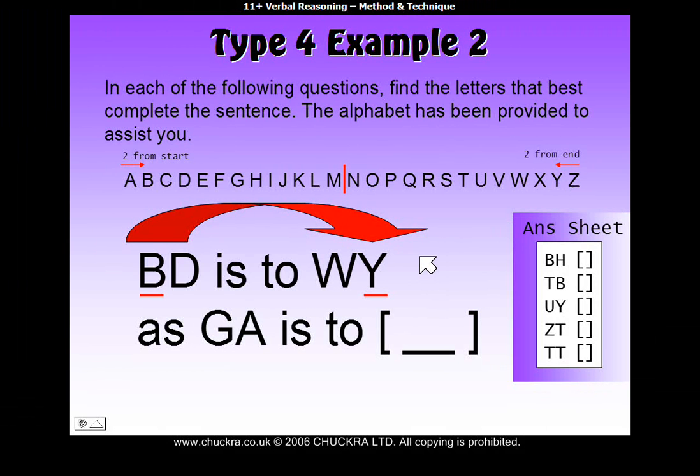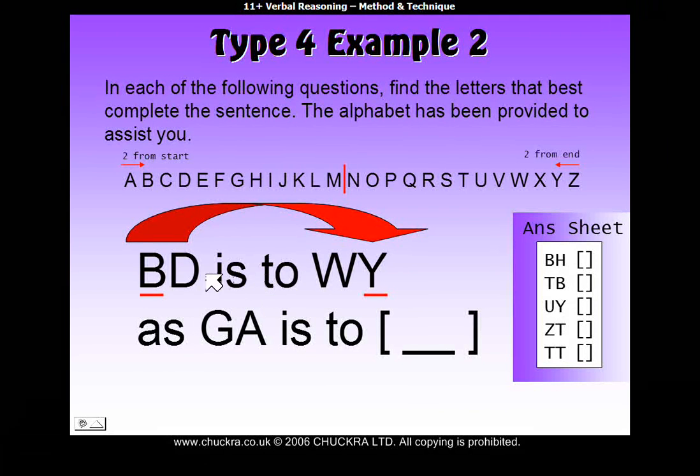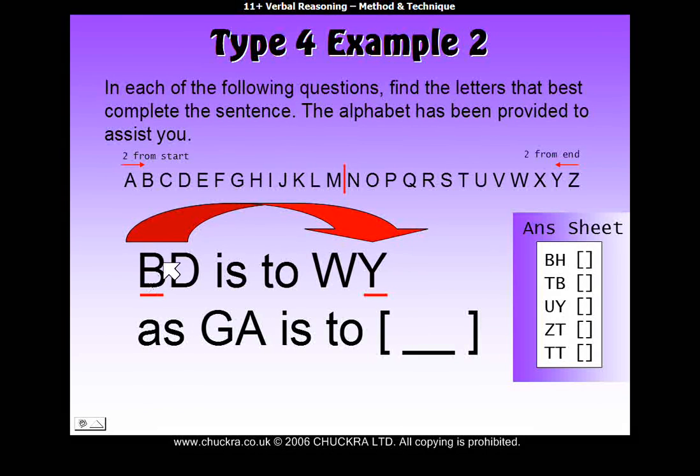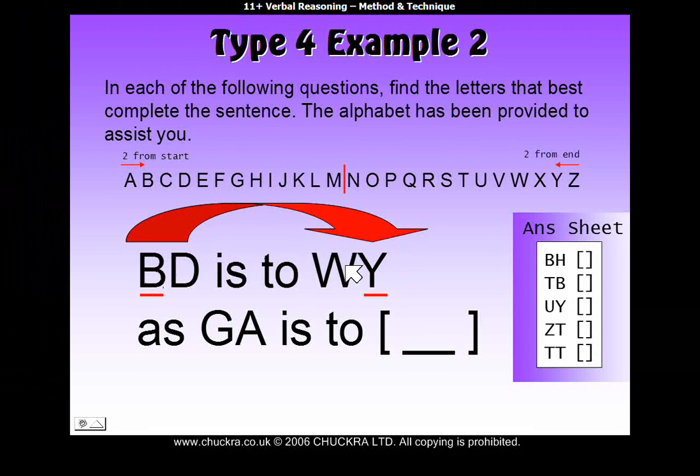Now notice here that there's also a slight difference in this because usually they ask you to find how the first letter of the first pair relates to the first letter of the second pair. But you can see here that we're looking at how the first letter of the first pair relates to the second letter of the second pair. So, just to go over that again, B is the second letter from the start of the alphabet and Y is the second letter from the end. So B's partner letter is Y.